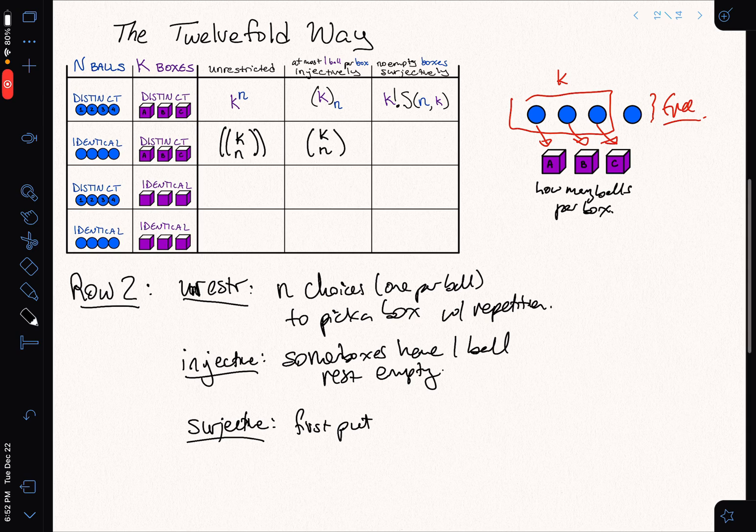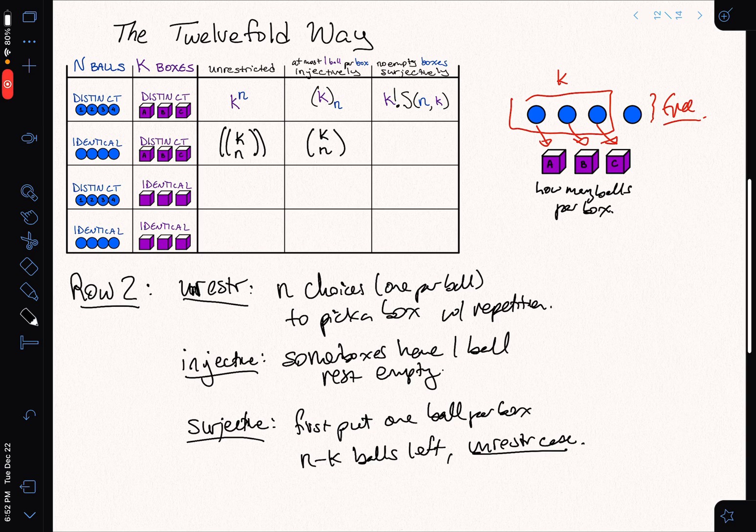So first, put one ball per box. And now how many balls do we have left? We have n minus K balls left. And now we're in the unrestricted case. Because you can put those however you want to do it. So we go to the unrestricted case, we still have K boxes, and now we have n minus K balls.